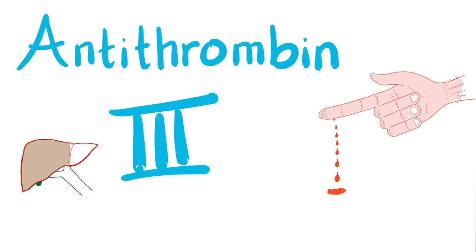Hey guys, it's Medicosis Perfectionalis, where medicine makes perfect sense. We are continuing our series about bleeding and coagulation. In the previous video, we had a quick review about hereditary angioedema. Today, I'll talk about the famous antithrombin 3, produced by the great liver. And it's really antithrombin — it hates thrombosis. Now, let's get started.